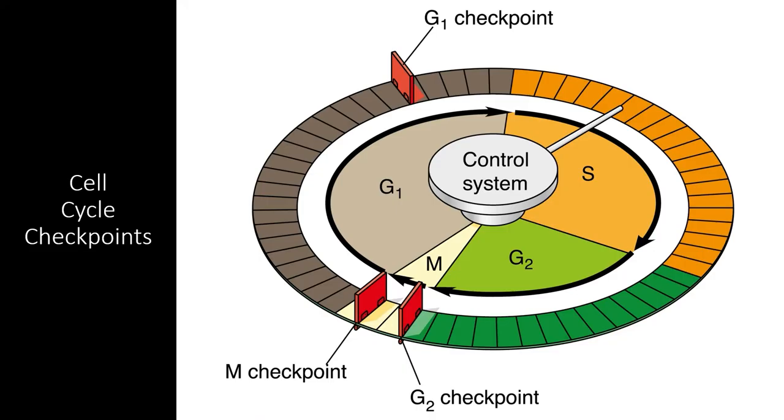The cell cycle includes a number of checkpoints, regulated by signal transduction pathways, that ensure the cell cycle proceeds as planned. Let's review the three most important cell cycle checkpoints.